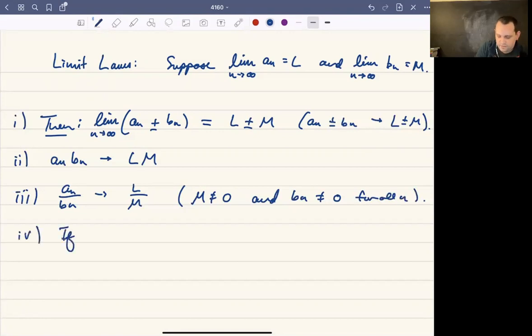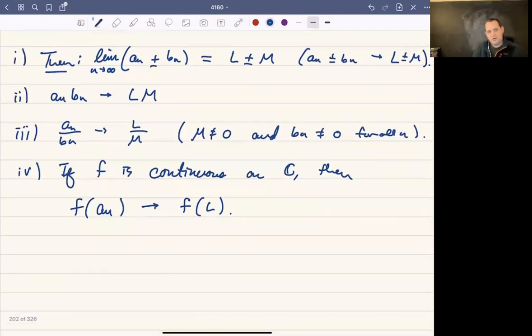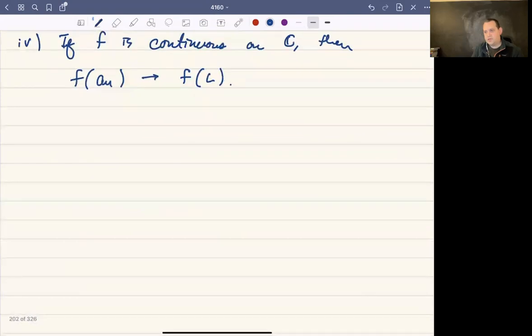Finally, if f is continuous on the complex plane, then f(a_n) converges to f(L). The limit of f(a_n) is f of the limit of a_n. You can move the function in and out of the limit. If f is continuous, you can do that. In fact, f doesn't need to be continuous everywhere, it just needs to be continuous over some set that contains a_n and L, where L is some accumulation point of the sequence a_n. You can get away with a little bit less, but what I said is true: if f is continuous, then we get that.